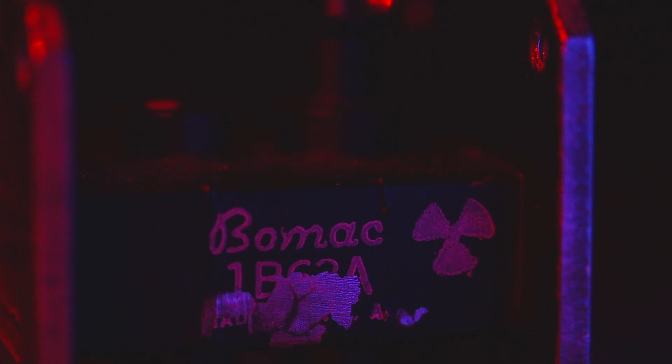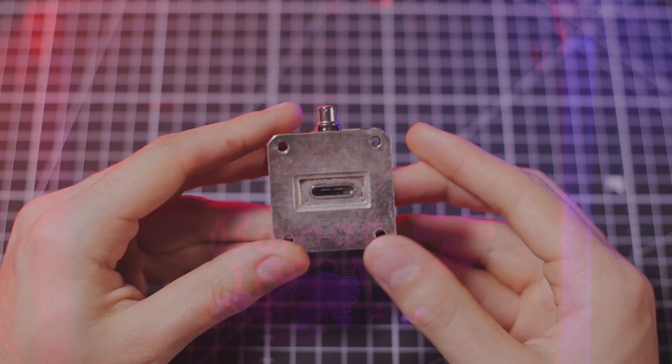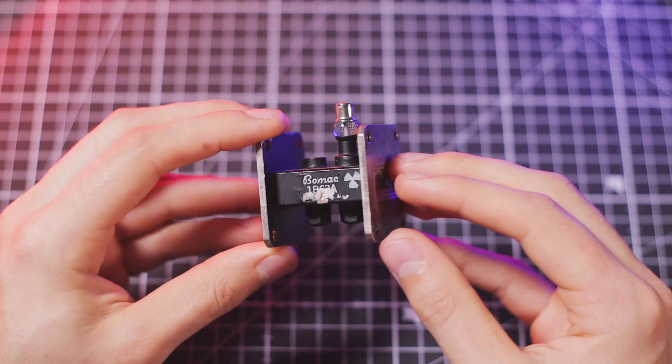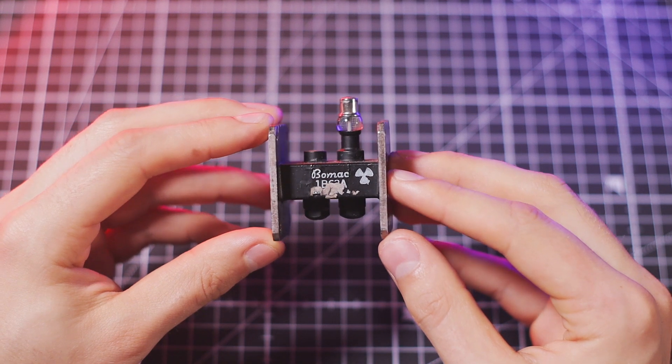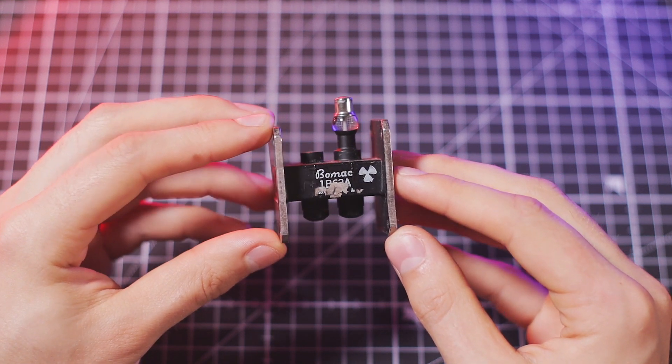One of the main uses of Cobalt-60 is in radiotherapy, where cancer cells are exposed to a beam of high-energy gamma radiation, effectively killing them. Its gamma rays are also used in sterilization of food and medical equipment and can even be used in leveling devices and thickness gauges to detect structural errors.